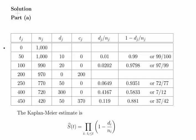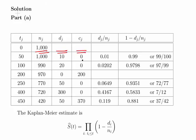We start with the period from 0 to 50 hours. We begin with 1000 light bulbs and nothing really happens — none break and none are lost. The second period runs from 50 to 100 hours. We still have 1000 light bulbs and 10 of them break. We don't lose any. So the event probability for the period 50 to 100 hours is 0.01, which is 10 out of 1000.